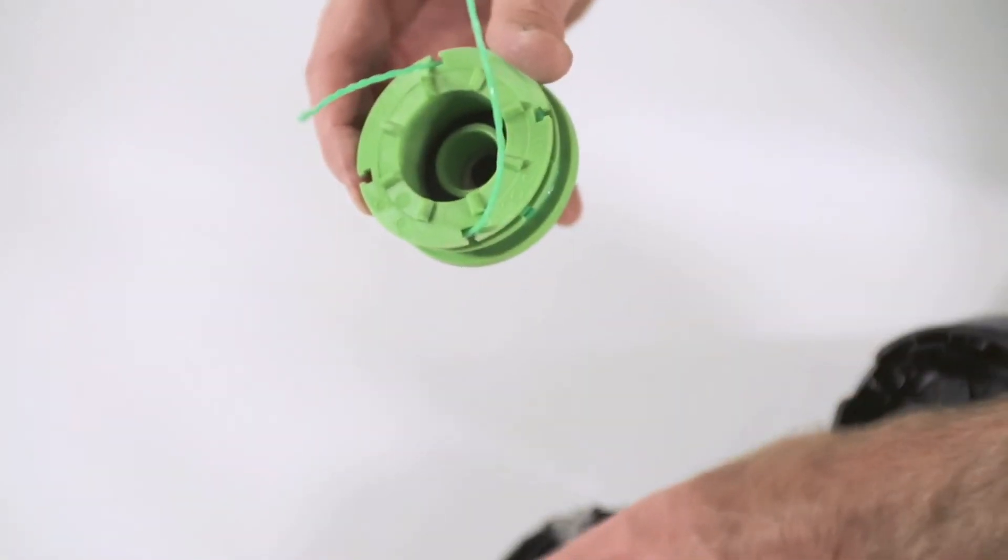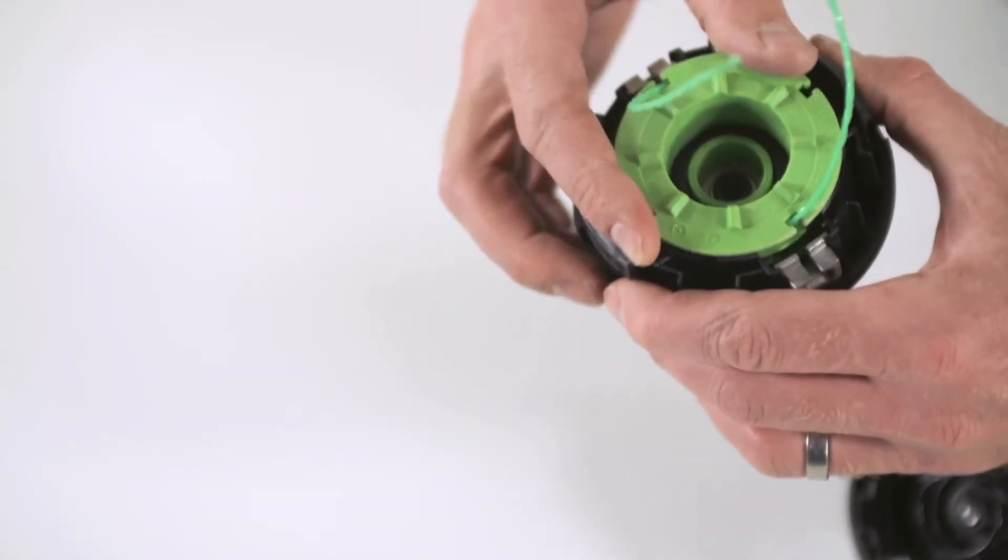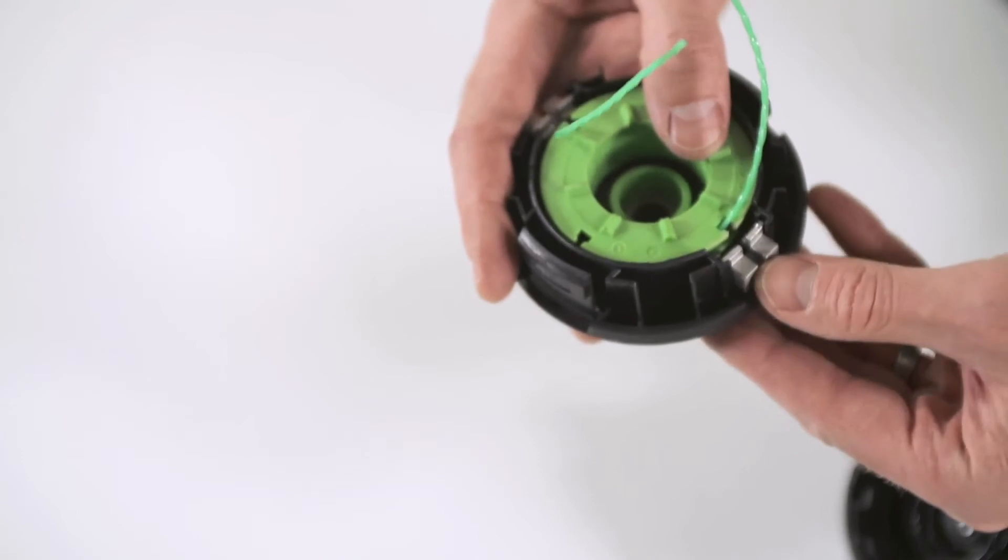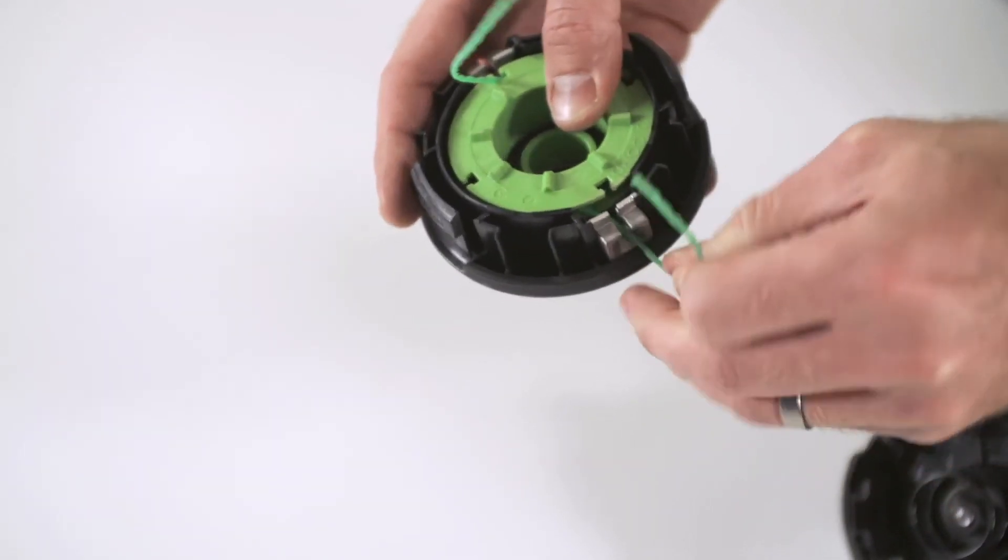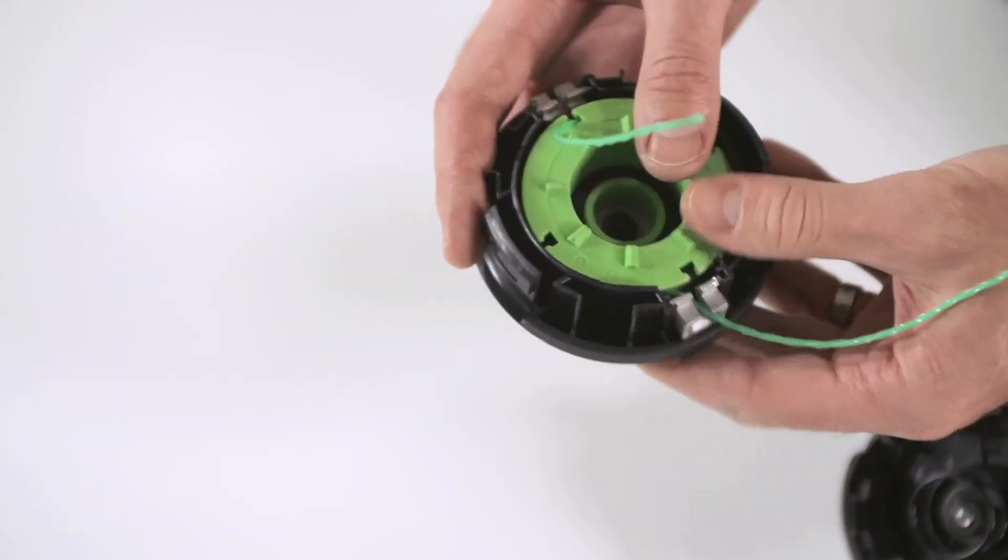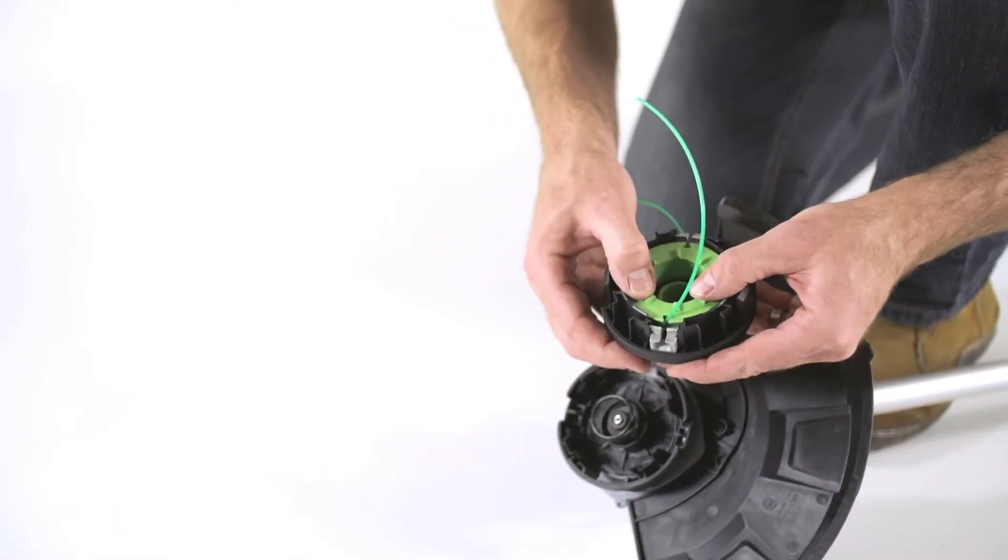Align the notches of the spool where the line is sticking out with the eyelets in the spool retainer and put the spool in the retainer. With the spool and spool retainer in your hand, grab the line and pull it to release it from the notch in the eyelet.